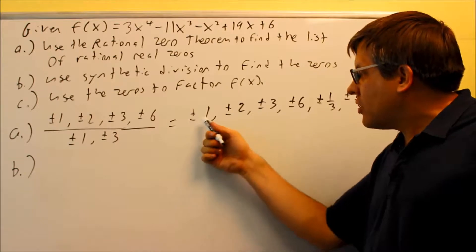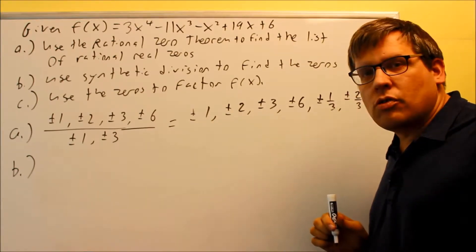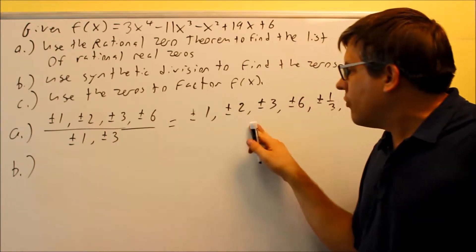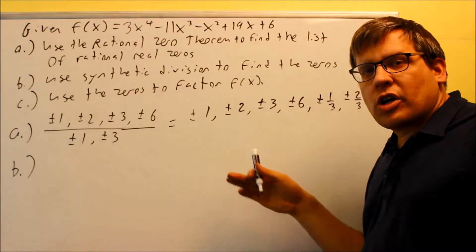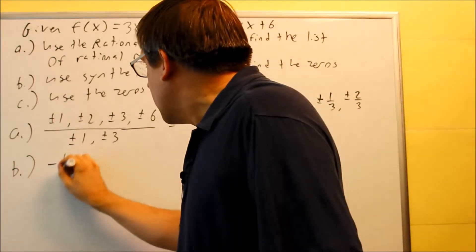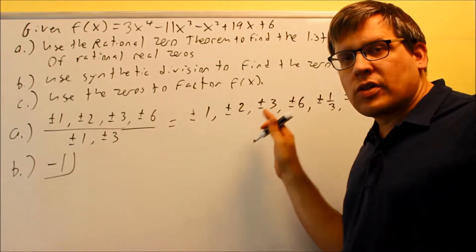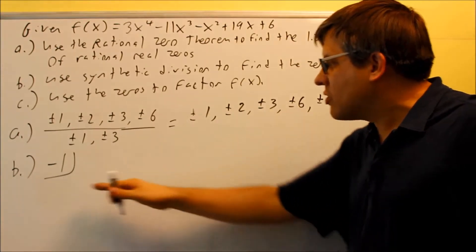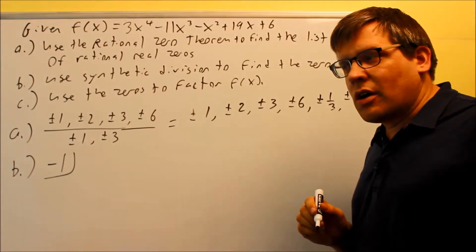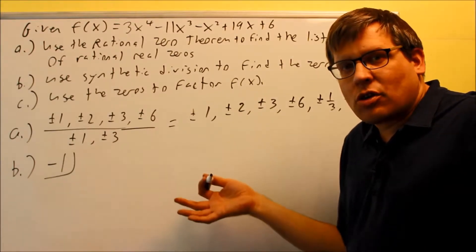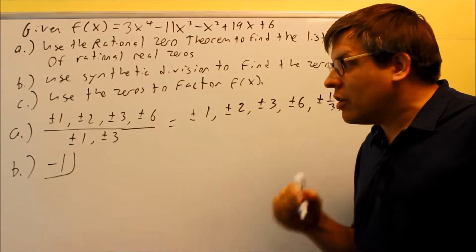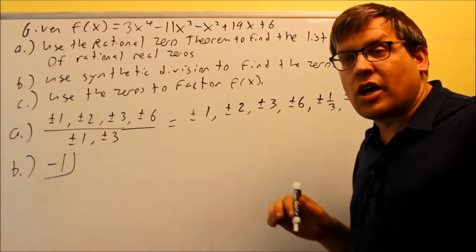You could do this by trial and error by testing all these numbers, or you can use your graphing program. Going through and looking at that, what we're going to find is there are two numbers that work: negative 1 and 2. It doesn't matter which one you start with. There are some other places it crosses as well, but these are whole numbers. When you look at the graph, you want to look for whole numbers where it crosses, because if it crosses at a fraction you won't be sure exactly where it crosses. It's better to pick numbers that fall exactly on whole numbers that you can easily identify.